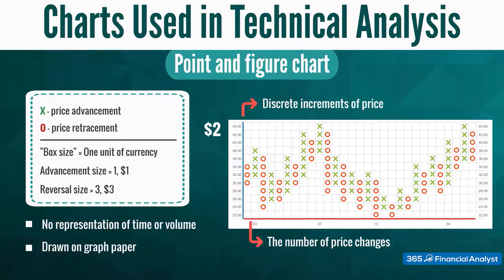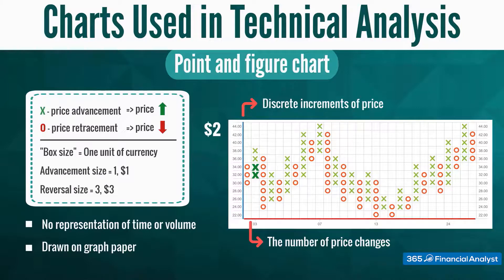The most common reversal size is three, meaning a reversal in price of three or more boxes — or three dollars in the case of a one-dollar box size. X represents an increase in price, while O represents a decrease. When a security's price closes up by one dollar, one X is drawn in a column; if it closes up by two dollars, two X's are drawn one on top of the other, and so on. As long as the security keeps closing at higher prices, the column of X's becomes taller. If the price does not increase by at least the box size, no X is drawn.